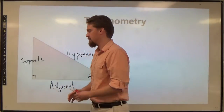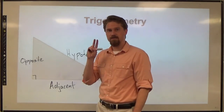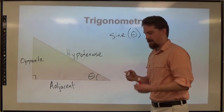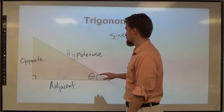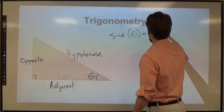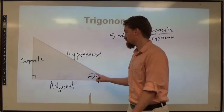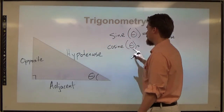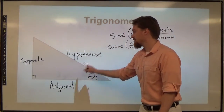Now we have a label for each one. We have three primary trig ratios related to angles. They are called sine, cosine, and tangent. Sine acts on this angle, and it relates this angle to the opposite side and the hypotenuse as a ratio. So sine of theta is equal to the opposite over the hypotenuse. The second one is cosine — it again acts on that same angle, but it relates the adjacent and the hypotenuse as a ratio. So cosine of theta is the adjacent over the hypotenuse.